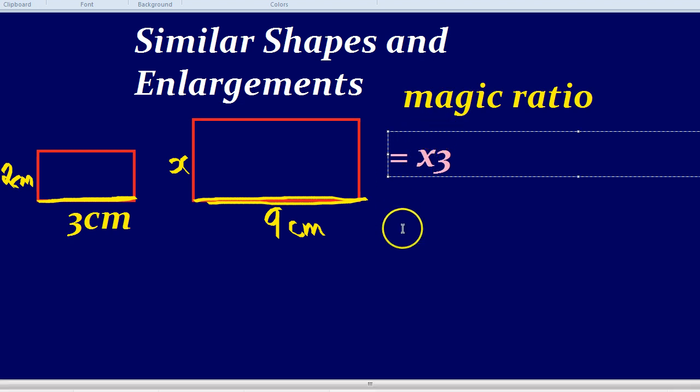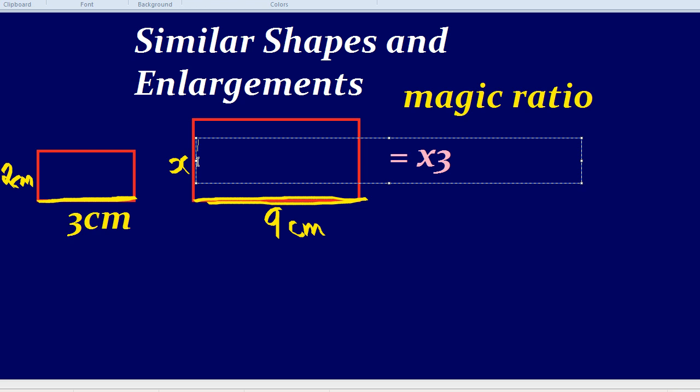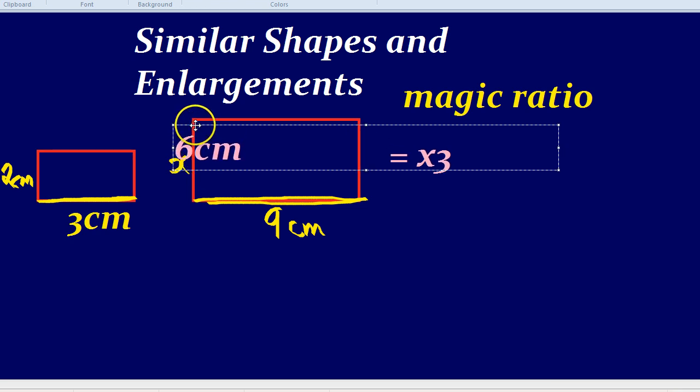That is going to be the same thing for the heights and for anything else to do with that shape. Not the angles, but any lengths to do with that shape, you'll have to multiply by 3 the smaller shape to get the bigger shape. For example, the height. If the height of the smaller shape is 2, what do you reckon the height of the bigger shape is going to be? It's going to have to be 6, because you do 2 times by 3 to get the bigger rectangle of 6.